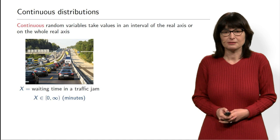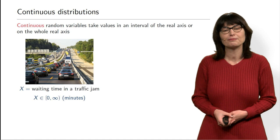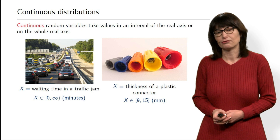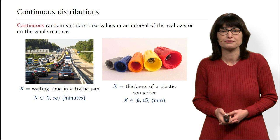For example, if you think about waiting time in a gym, it can be anything from 0 to infinity — it doesn't need to be exactly 1, 2, or 3 minutes. Another example: the thickness of a connector always has some error involved, and it can be anything — for example, from 9 to 15 millimeters.